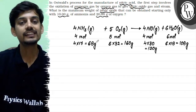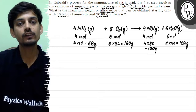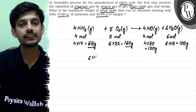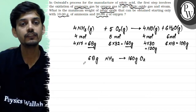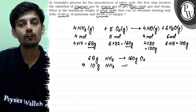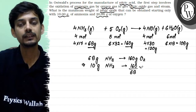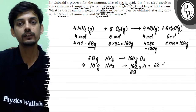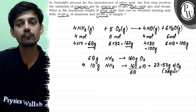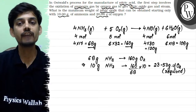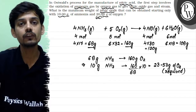From here we can see that 68 grams of ammonia will be oxidized by 160 grams of oxygen. Using the unitary method, for 10 grams of ammonia we will be needing 160 divided by 68 multiplied by 10, which comes out to be 23.53 grams of oxygen gas. This much oxygen is required for complete oxidation of ammonia, but the available amount of oxygen is only 20 grams.